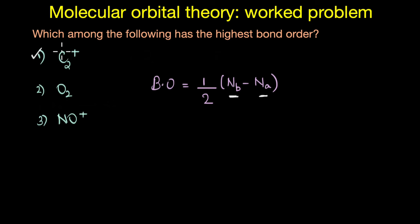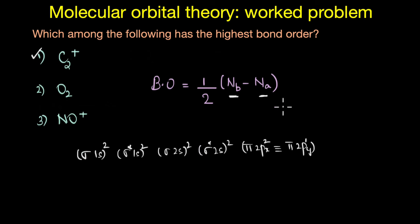In the case of C2+, one carbon atom has 6 electrons and two carbon atoms would have 12 electrons, but with a positive charge, C2+ overall has a total of 11 electrons. Based on this, the electronic configuration of C2+ would be: σ1s², σ*1s², σ2s², σ*2s², π2px², and π2py¹.